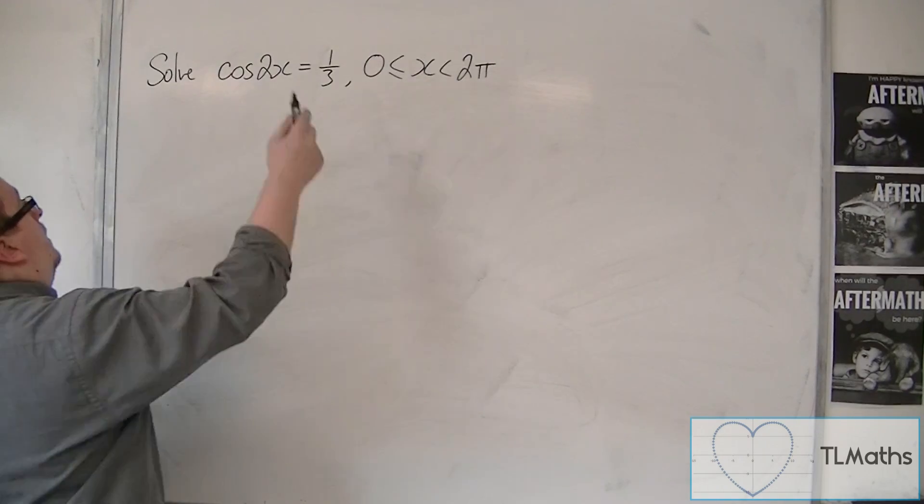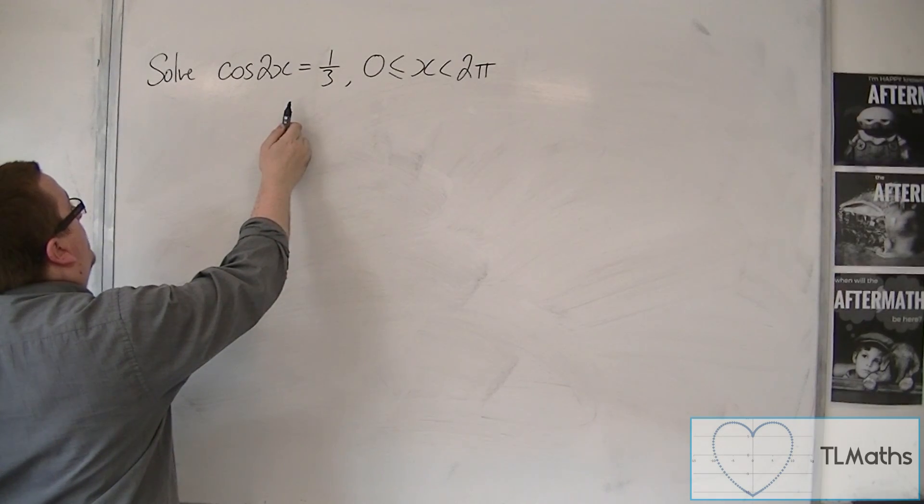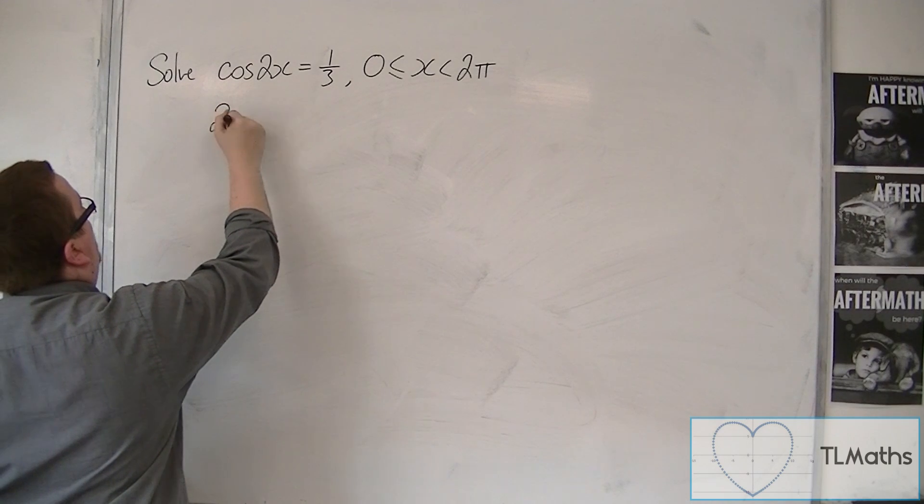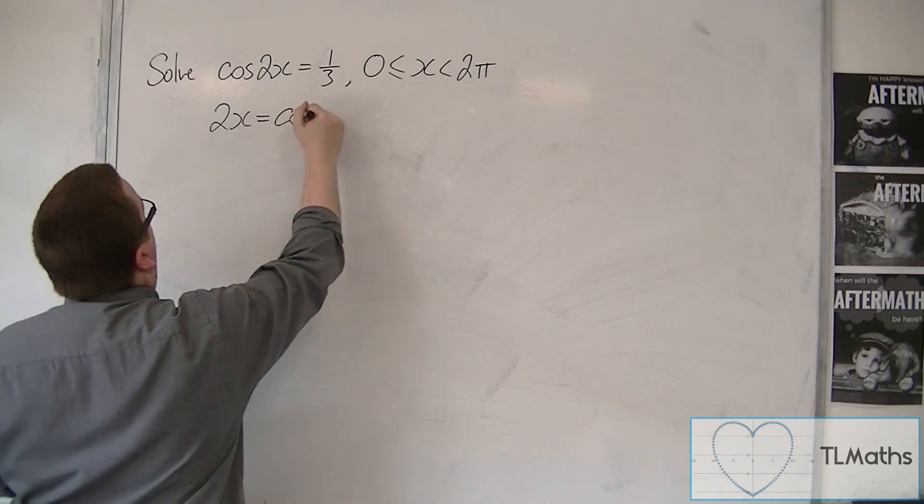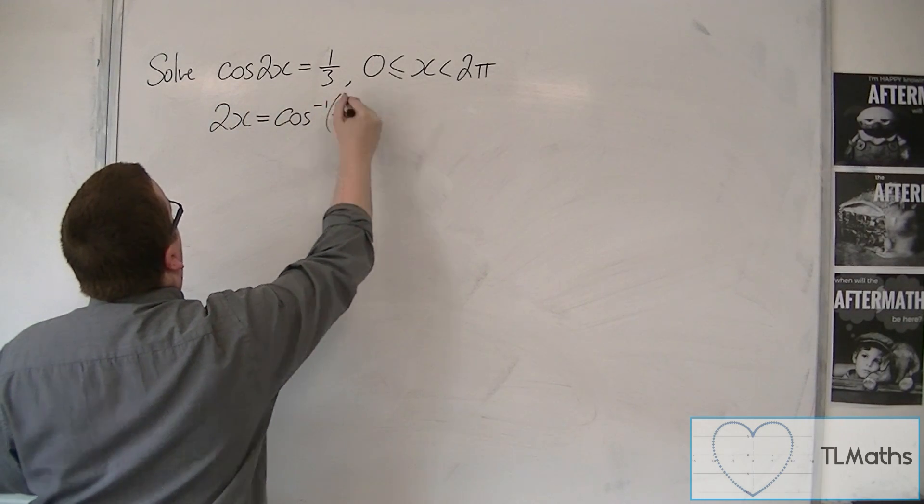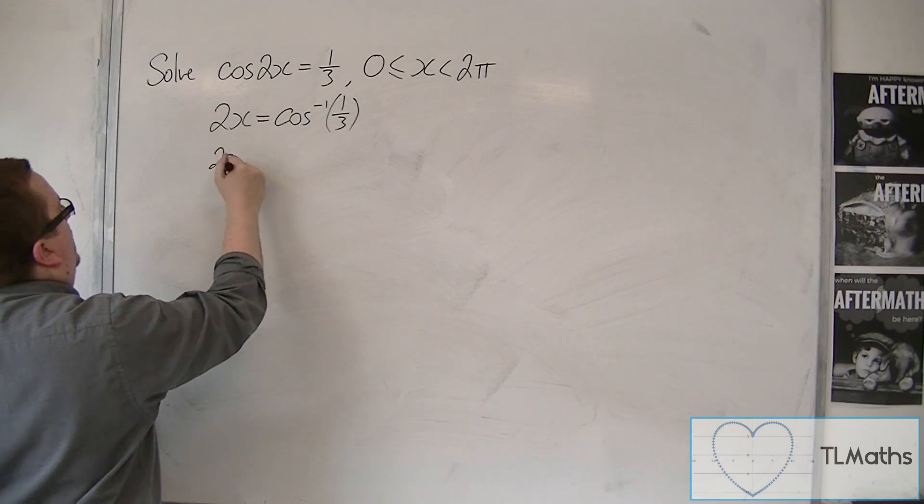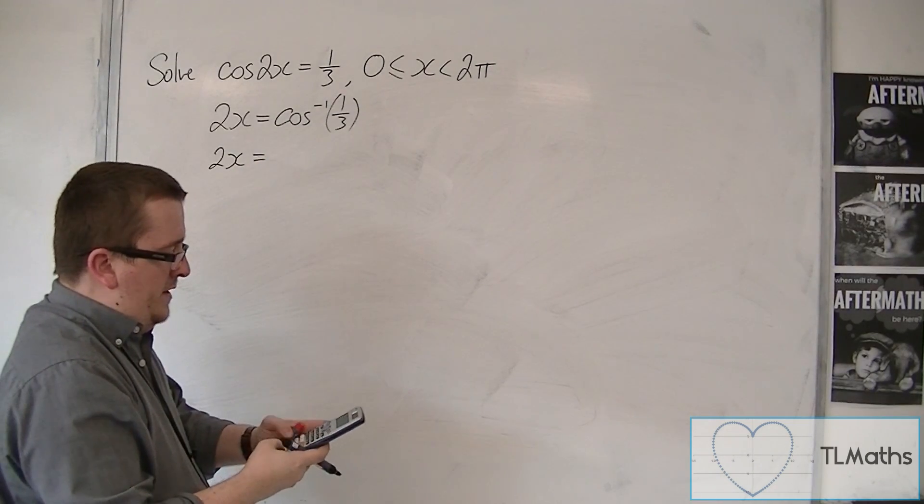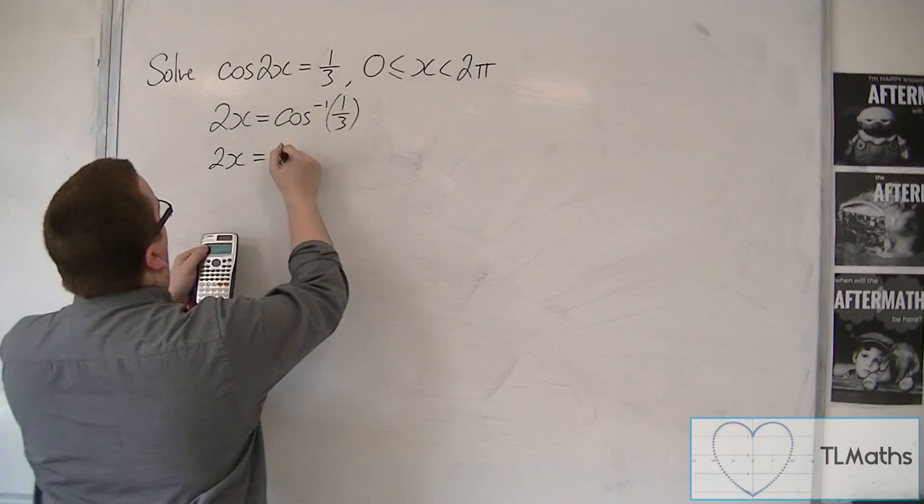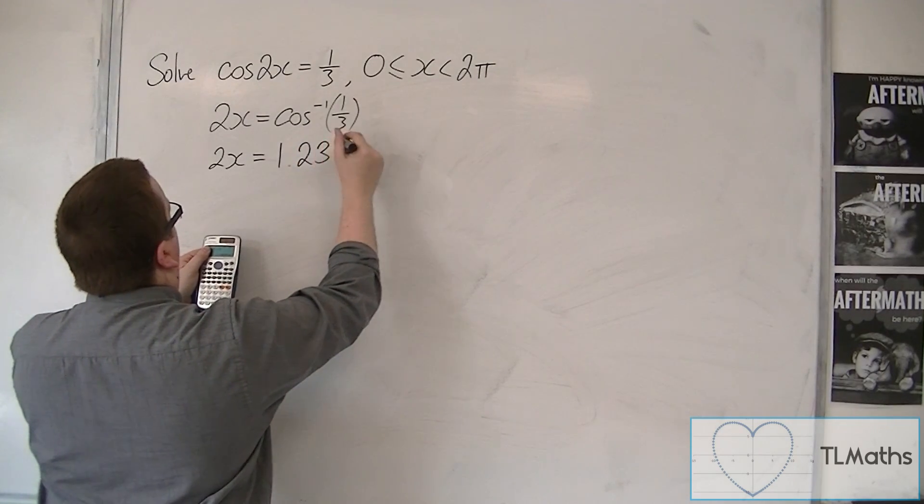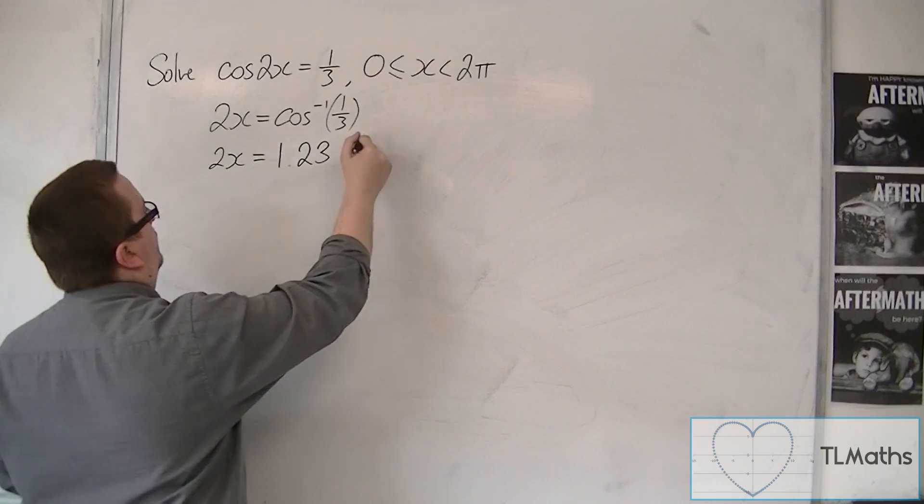And then we're going to inverse cosine both sides, so we're going to get 2x is equal to inverse cosine of 1 third. So inverse cos of 1 third gets me 1.23 to 3 significant figures.